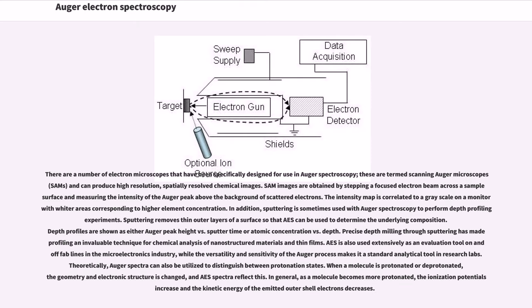There are a number of electron microscopes that have been specifically designed for use in Auger spectroscopy; these are termed scanning Auger microscopes (SAMs) and can produce high resolution, spatially resolved chemical images. SAM images are obtained by stepping a focused electron beam across a sample surface and measuring the intensity of the Auger peak above the background of scattered electrons. The intensity map is correlated to a grayscale on a monitor with whiter areas corresponding to higher element concentration.